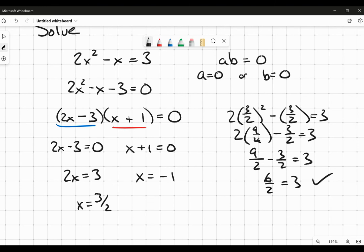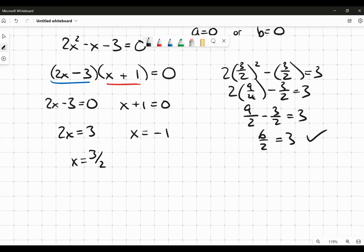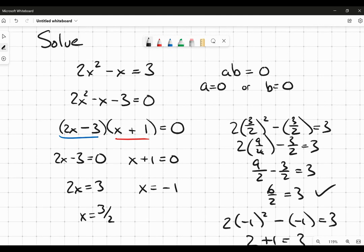Now let's try the negative 1. 2 times negative 1 squared minus negative 1. Does that equal 3? Well, negative 1 squared is going to be 1. So 2 times 1 is 2 minus negative 1 is simply adding 1. And yep, that equals 3. So yeah, both of those values that I came up with work.